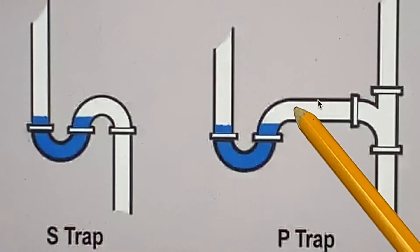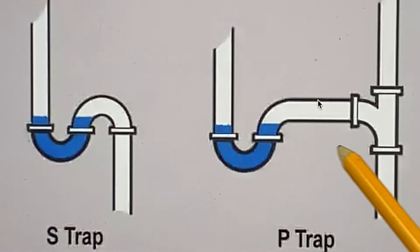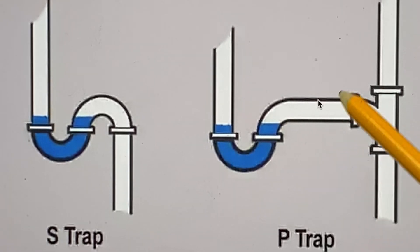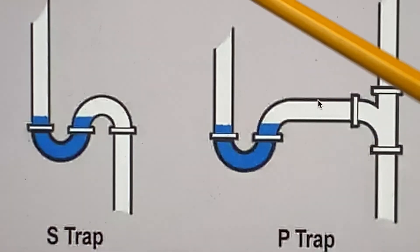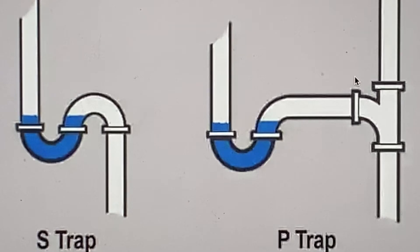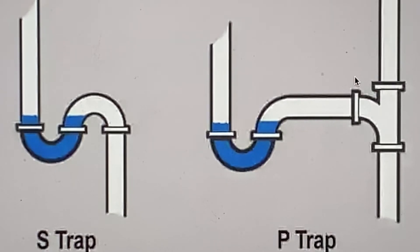The advantages of the P-trap over the S-trap are simply this: it has a vent stack and it has that waste arm extension, reducing the possibility of any suction from gravity or the force or weight of the water pushing through the drain pipe. And remember, not all of the gases that come out of the sewer have a foul odor. You have gases like methane, ammonia, and hydrogen sulfide. Some of these gases are pretty sneaky — they're poisonous and some of them are even explosive. That's why it's important to have that water barrier or trap there.